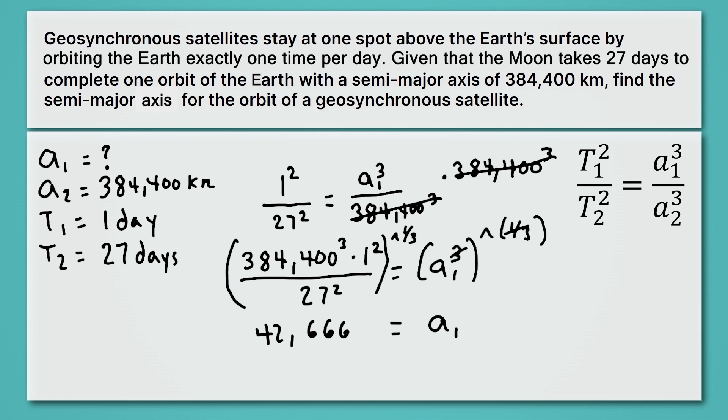Now we want to round for the correct number of sig figs here. And one day just has one sig fig right there. So we'll round this to 40,000. So this should be rounded then to 40,000. And the units will be, of course, kilometers. So that's the final answer to our problem.